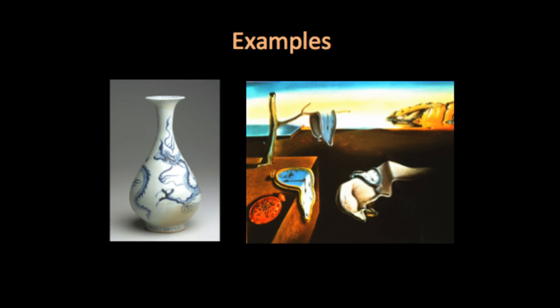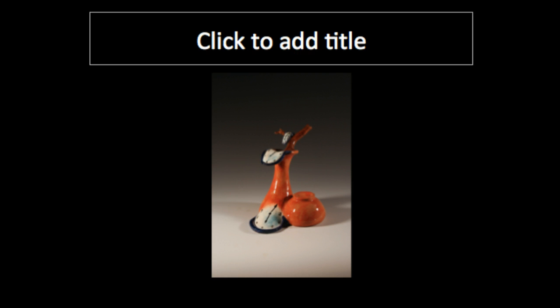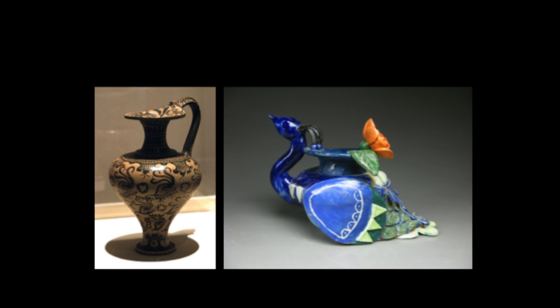Here are some examples from previous semesters when I have assigned this project. These are two source materials chosen by a student: a vessel on the left and a painting by Dali on the right. This is the finished sculpture. You can see how the student combined the two artworks and transformed and combined the elements into a sculptural form. In this example, you can see how the student used the shape of the vessel and transformed it into a sculpture while still hinting at its original form.